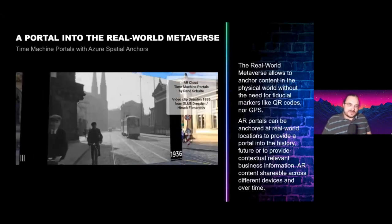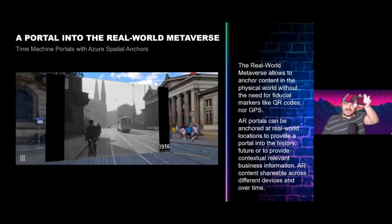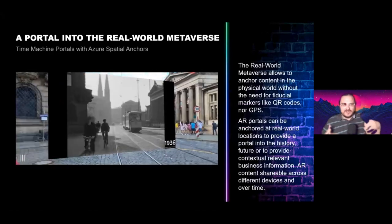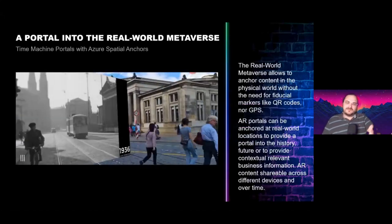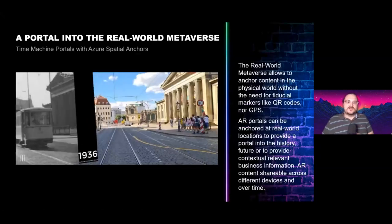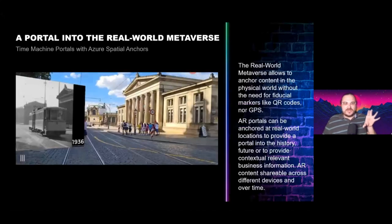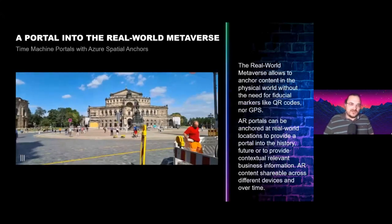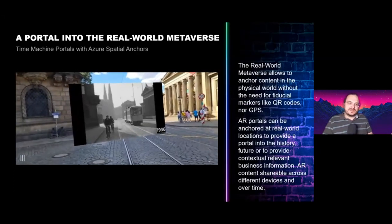What's interesting about this real-world metaverse demo is that I anchor virtual content in the real world without any external information — no GPS, no QR codes, no markers. The real world becomes the marker. I use Azure Spatial Anchors, stored in the cloud. When someone else comes with their smartphone and the app installed, they scan the location, it recognizes the feature points, and loads the same content — video, photo, or 3D model. This enables contextual information delivery and very precise indoor localization at around 10 centimeters, without satellite data.